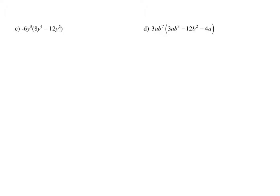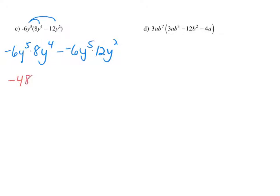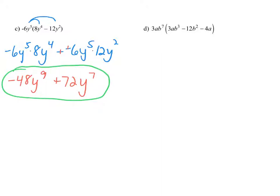Let's multiply negative 6y to the fifth times the quantity 8y to the fourth minus 12y squared, using the distributive property. Negative 6 times 8 is negative 48, and y to the fifth times y to the fourth gives y to the ninth. Then 6 times 12 is 72; the minus times negative gives plus 72, and y to the fifth times y to the second gives y to the seventh. Our answer is negative 48y to the ninth plus 72y to the seventh.